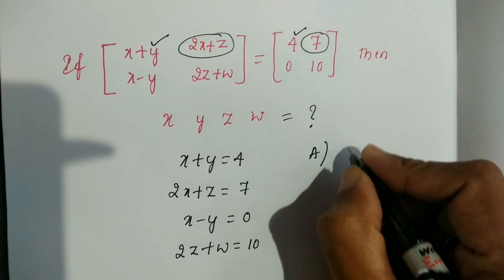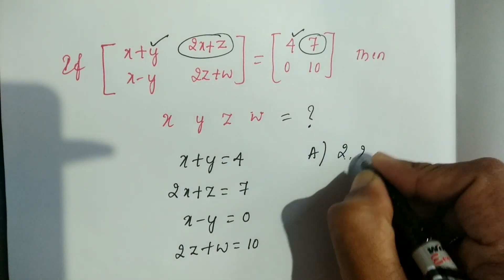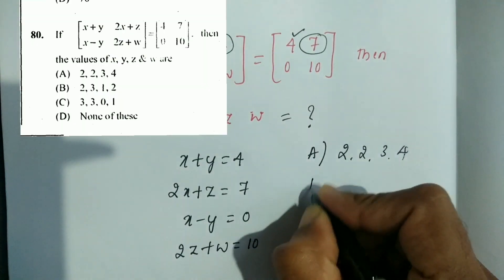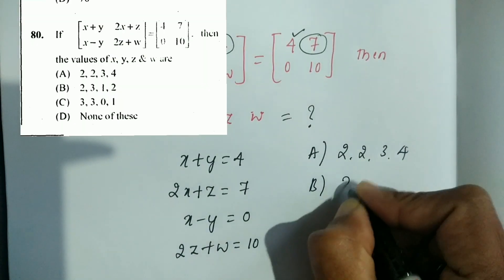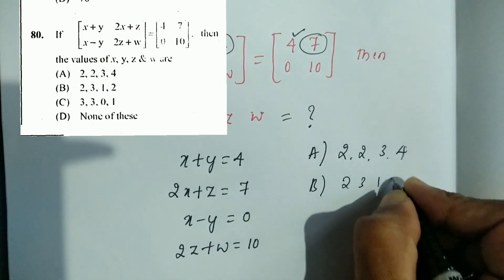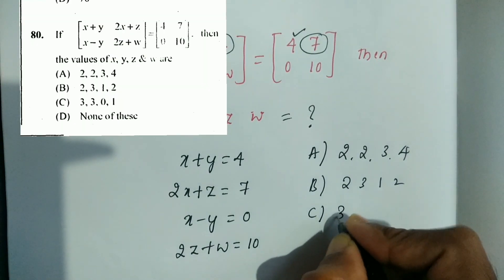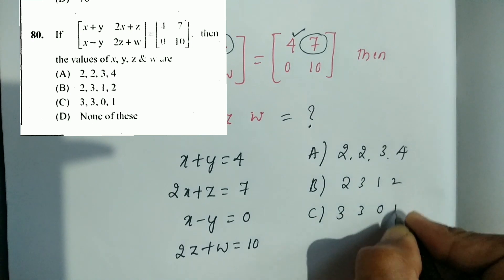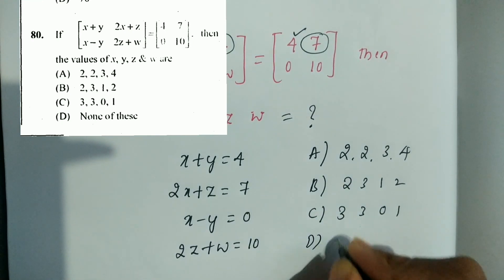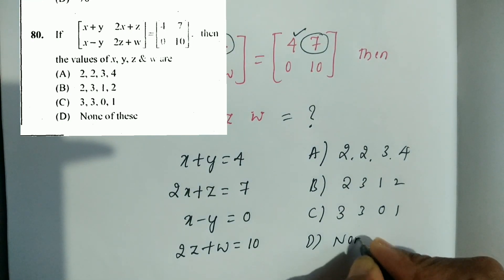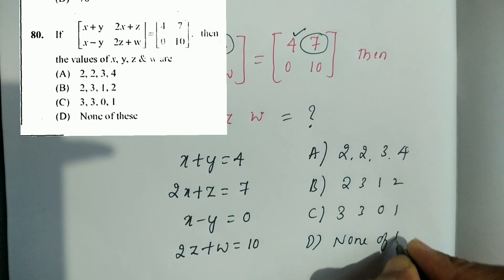Let me recall the options. Option A is 2, 2, 3, 4. Option B is 2, 3, 1, 2. Option C is 3, 3, 0, 1. Option D is none of these. Here, the values represent x, y, z, and w respectively.